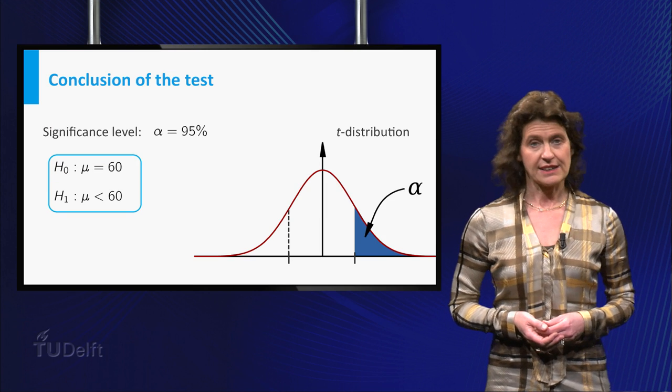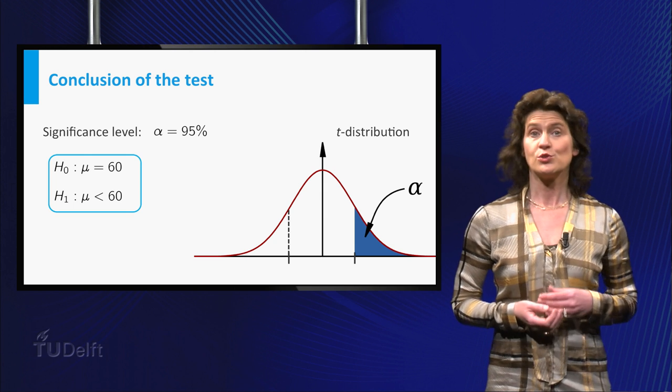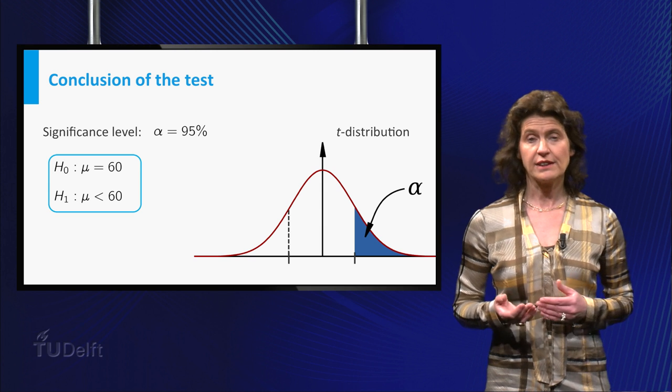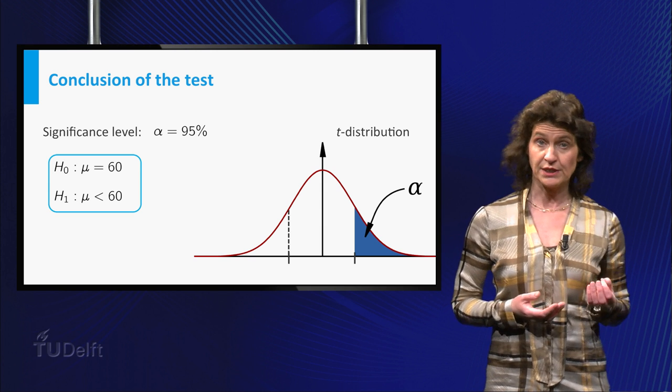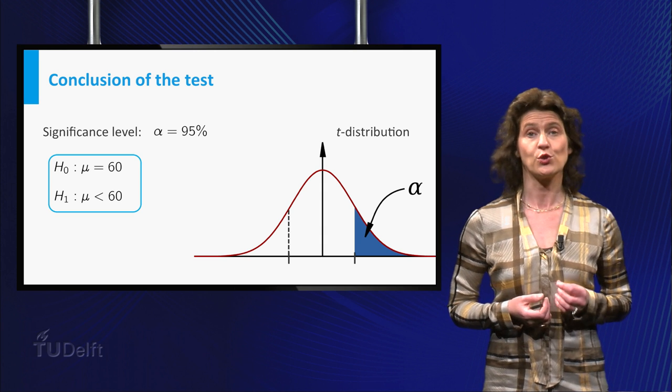Let's perform the test at a significance level of 95 percent. To decide whether you reject the null hypothesis, you have to compare the outcome of your test statistic t to the critical value of the t distribution with 24 degrees of freedom.